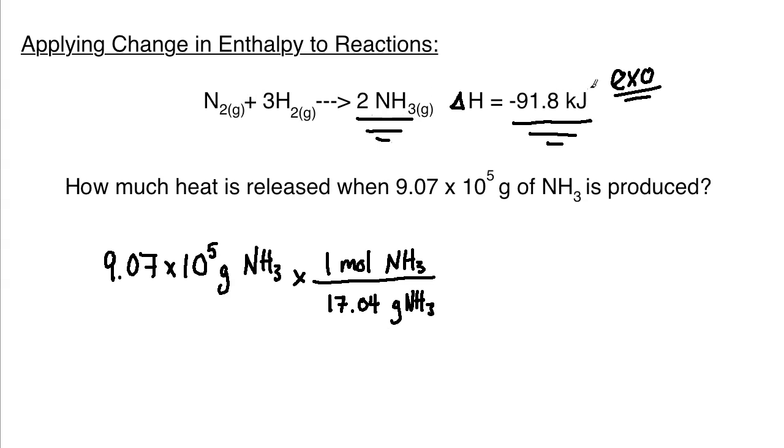How can we determine how much energy is going to be released in this process? We look at the stoichiometric ratio. Every negative 91.8 kilojoules - every 91.8 kilojoules released - we have produced two moles of this ammonia gas. You're looking at the stoichiometric value in front of the NH3. Similar to limiting reactants where we would take a reactant and predict how much product, now we're taking the product and predicting how much heat is going to be involved in that process.